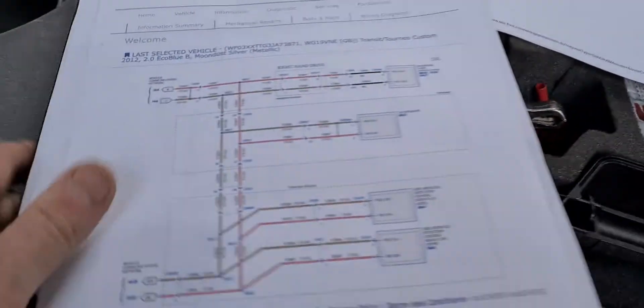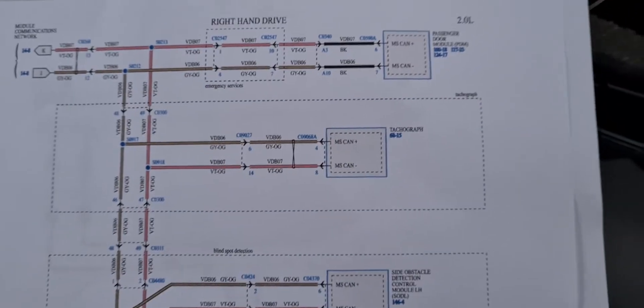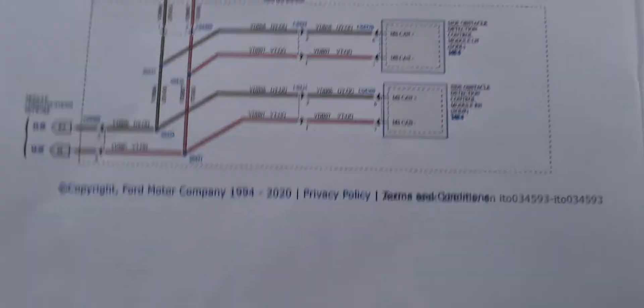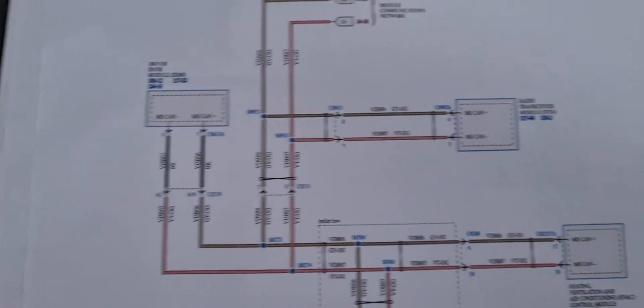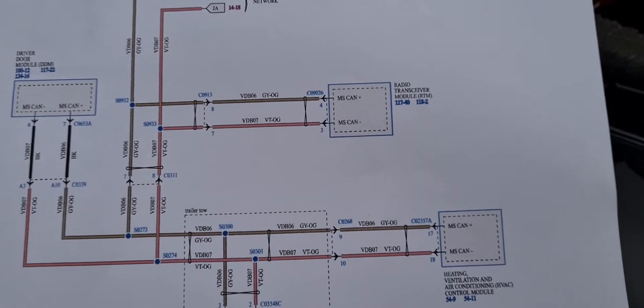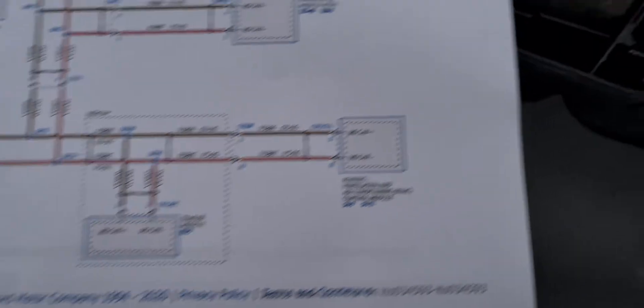On this network — if the camera focuses — we have: passenger door module, tachograph, side obstacle (doesn't have it), driver door module, radio, radio transceiver, trailer module, and HVAC.